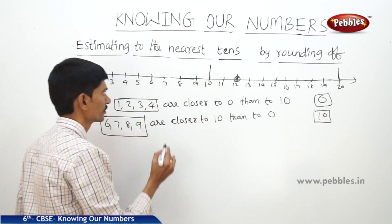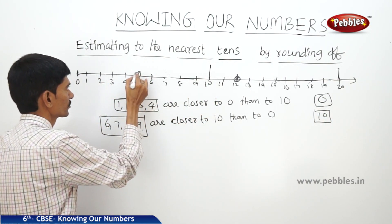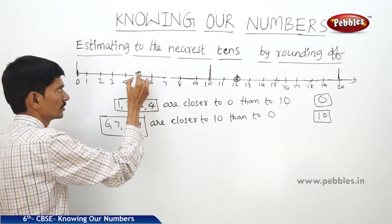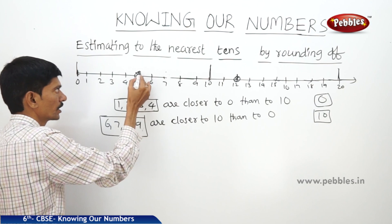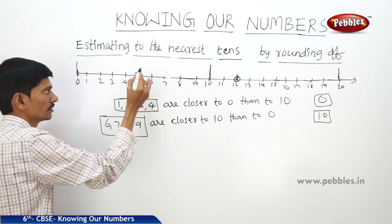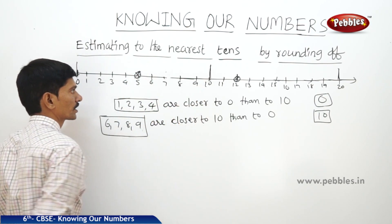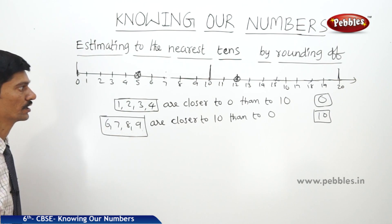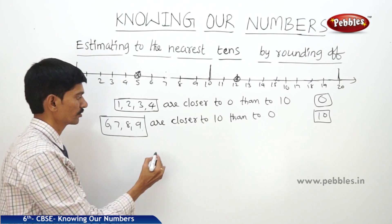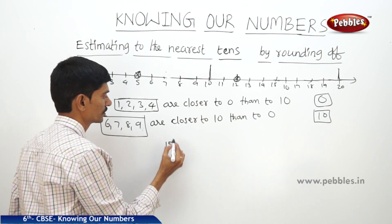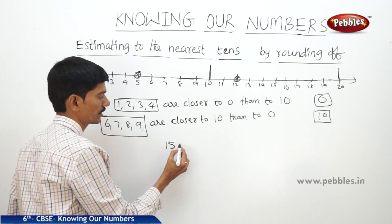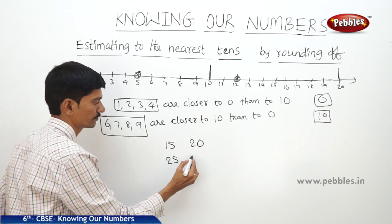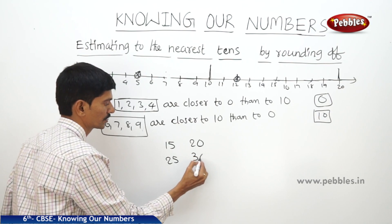But the number 5 is equidistant from 0 as well as 10. So then it is a common practice to round off 5 to 10. For example, 15 can be rounded off to 20, or 25 can be rounded off to 30.